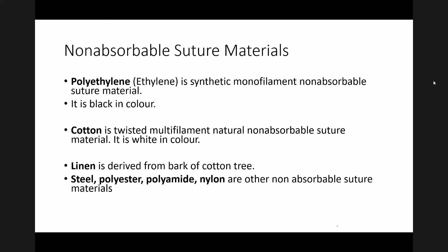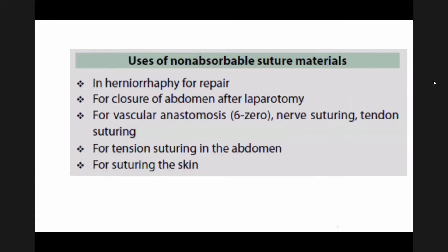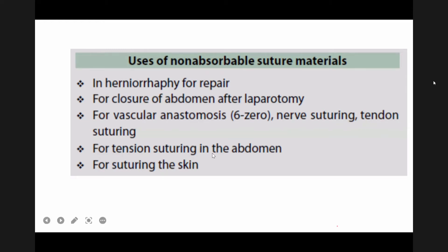Non-absorbable suture materials are used in herniorrhaphy surgery and for closure of the abdomen after laparotomy. Nowadays, delayed absorbable sutures like PDS or Maxon are also used for abdominal closure after laparotomy. For vascular anastomosis, non-absorbable sutures are always used. For knot suturing, tendon suturing, tension suturing in the abdomen, and for suturing skin, non-absorbable sutures are also used.